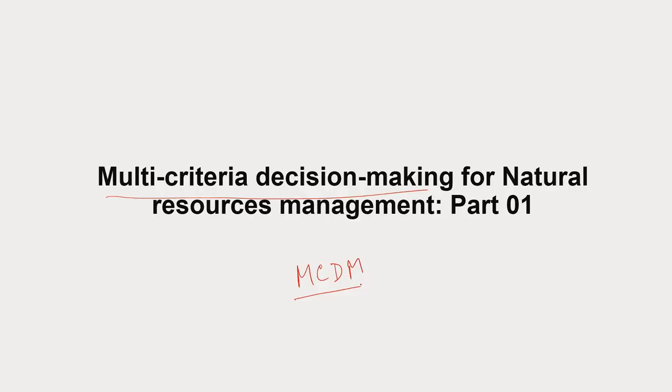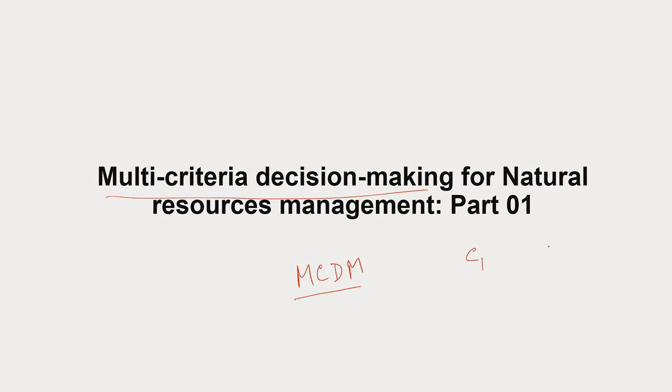Today, in this Part 1 of MCDM on natural resource management, we will be discussing in a little more detail how MCDM actually works. If you recall, we saw in the introductory lecture that MCDM uses mathematical principles to find out the best possible alternative for a given criteria. We discussed criteria C1, C2, C3, and alternatives A1 to An.